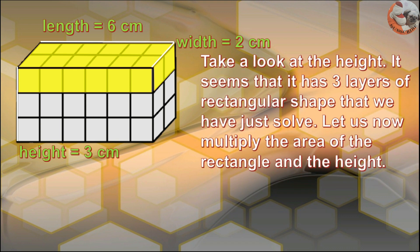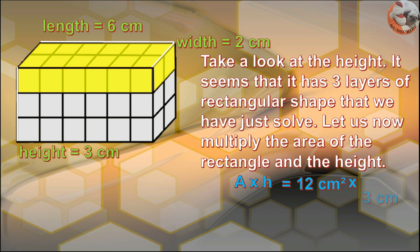Take a look at the height. It seems that it has three layers of the rectangular shape we just solved. Let us now multiply the area of the rectangle by the height. Area times height equals 12 cm² times 3 cm, which equals 36 cm³. This is the volume of the given rectangular prism.